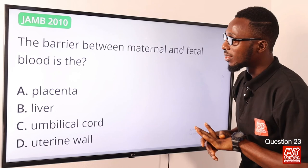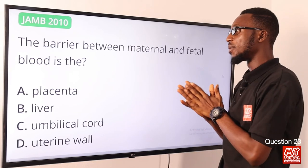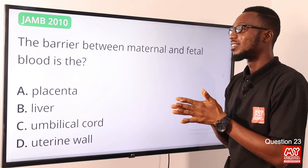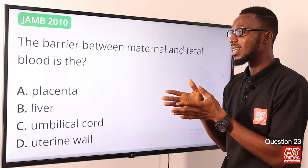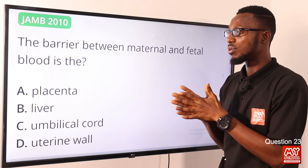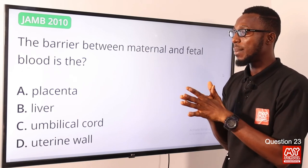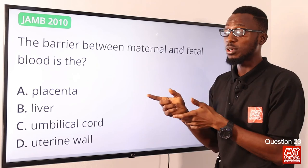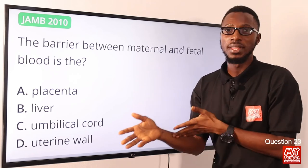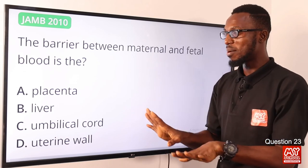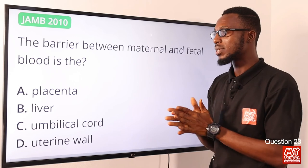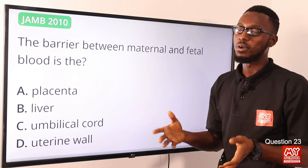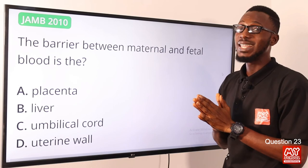Question 23: The barrier between the maternal and the fetal blood is the placenta. The placenta is a selective barrier and is also responsible for producing hormones like progesterone and oestrogen. Progesterone maintains the uterus so it does not contract prematurely, though its production decreases a few weeks before birth to allow contractions to push the baby out. The placenta is expelled from the body after birth. The correct option is option A, the placenta.